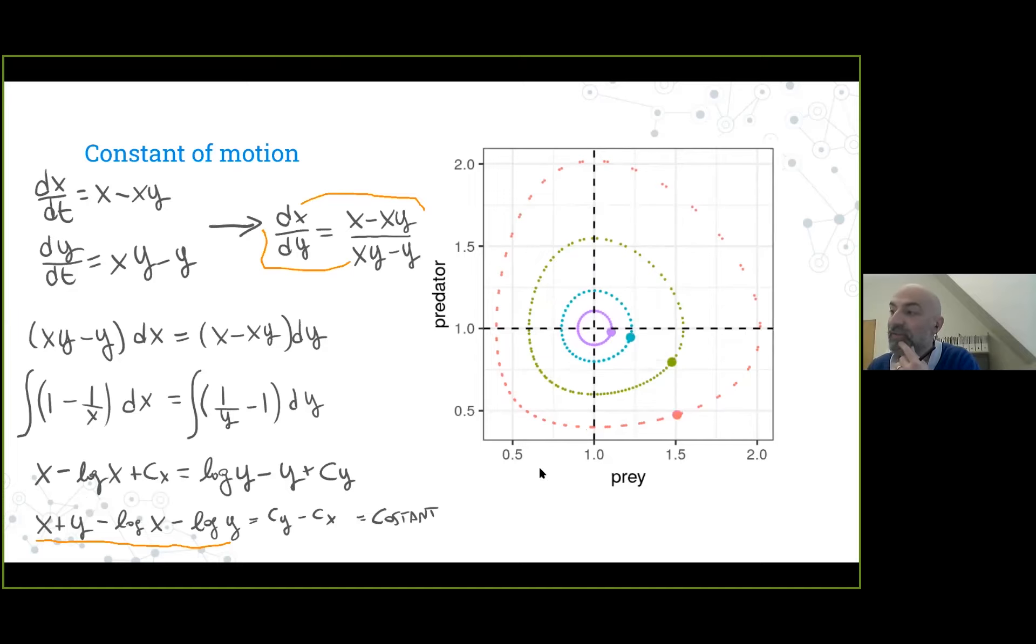When we bring all variables to the left and constants to the right, we find that this quantity is constant through the dynamics. This is a constant of motion, exactly like planets orbiting the sun would conserve angular momentum. This means these dynamics form closed orbits in this plane where we have the prey on the x-axis and the predator on the y-axis. Here I show four trajectories starting from different initial conditions cycling counterclockwise.